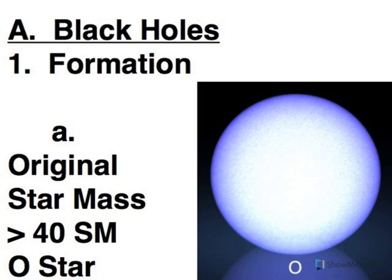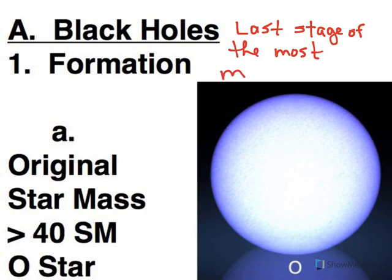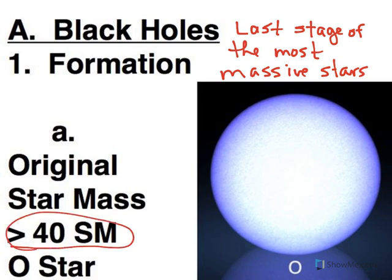Black holes. So black holes are the last stage of the most massive stars. These are the stars that have an initial mass greater than 40 solar masses. So essentially we're talking about O stars, the fate of an O star.